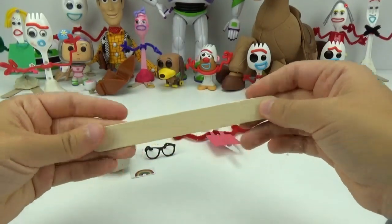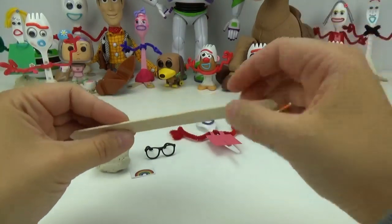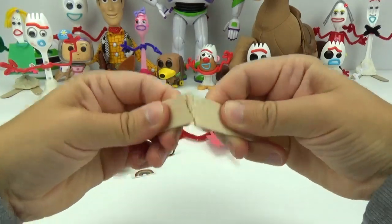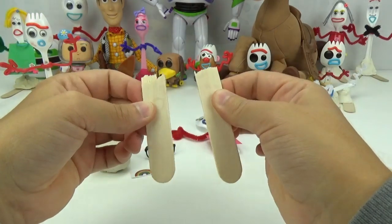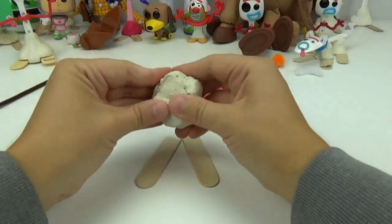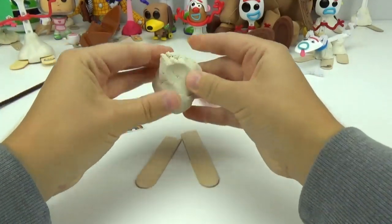My next step for Grandpa Forky is going to be his feet. With this popsicle stick, I will break it in half, right down the middle. Now, he has two feet. We will place them in the shape of a V and add the modeling clay to the base.